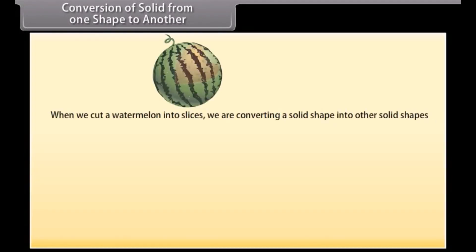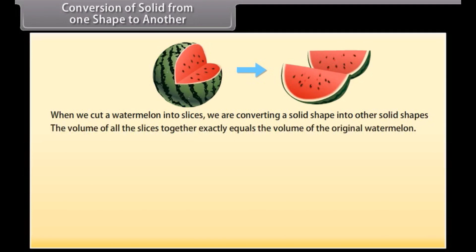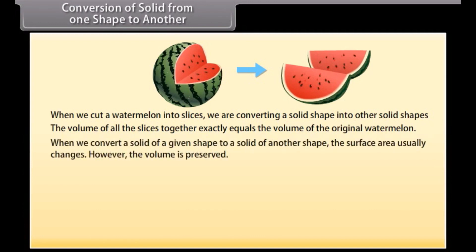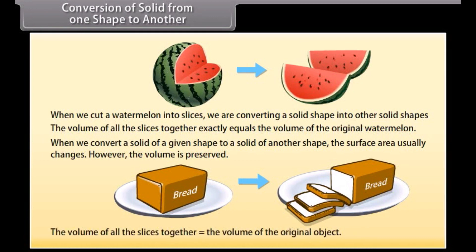Conversion of solid from one shape to another. When we cut a watermelon into slices, we are converting a solid shape into other solid shapes. Regardless of size and shape of the slices, the volume of all the slices together exactly equals the volume of the original watermelon. When we convert a solid of a given shape to a solid of another shape, the surface area usually changes; however, the volume is preserved. Similarly, in case of cutting bread into slices, the volume of all the slices equals the volume of the original object.